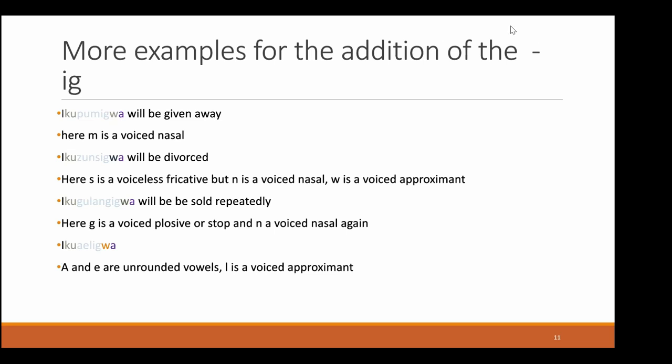Here are more examples for the addition of the IG, to get a better sense of which cases trigger it. First: 'ikupumigwa,' which means 'will be given away' — M here being a voiced nasal consonant. Then 'ikusunsigwa,' meaning 'will be divorced' — here S is the voiced fricative, N is the voiced nasal, and W is again a voiced approximant. Then 'ikugulangigwa,' meaning 'will be solved repeatedly' — J is the voiced plosive or stop, N is the voiced nasal. And 'ikuaeligwa' — here A and E are unrounded vowels and L is the voiced approximant.